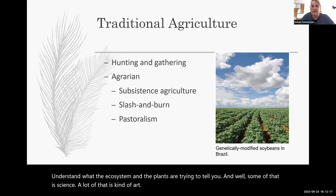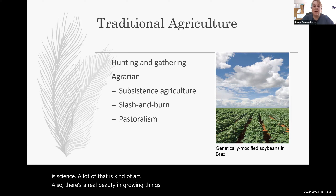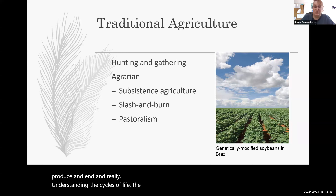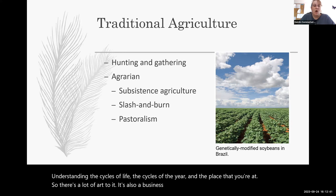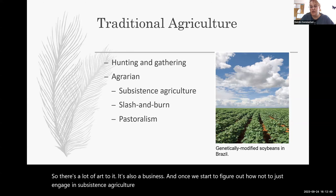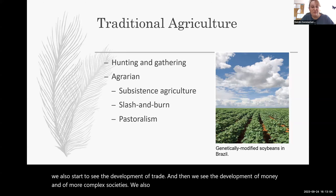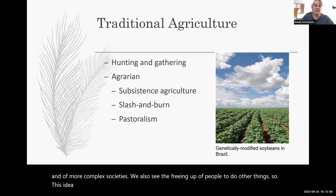There's a real beauty in growing things and raising things and seeing that life start, produce, and end — really understanding the cycles of life, the cycles of the year and the place that you're at. It's also a business. Once we figure out how not to just engage in subsistence agriculture but start to grow more food than we need, we see the development of trade, money, and more complex societies. We also see the freeing up of people to do other things. This idea of surplus really shifts how society works.